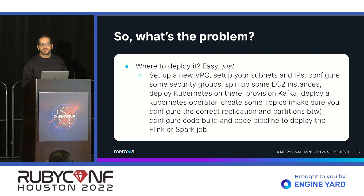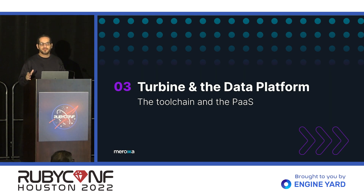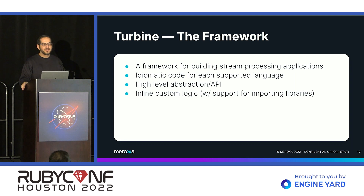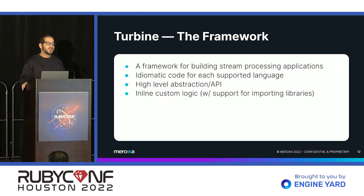So that's the problem space we're trying to tackle. At Maroxa, our answer is basically Turbine and the Maroxa data platform. Turbine is the tool chain and the data platform is the platform-as-a-service that runs it. Turbine is actually a family of frameworks for various languages — we started with Go, JavaScript, and Python, and at this conference we're making Turbine available for Ruby as well.